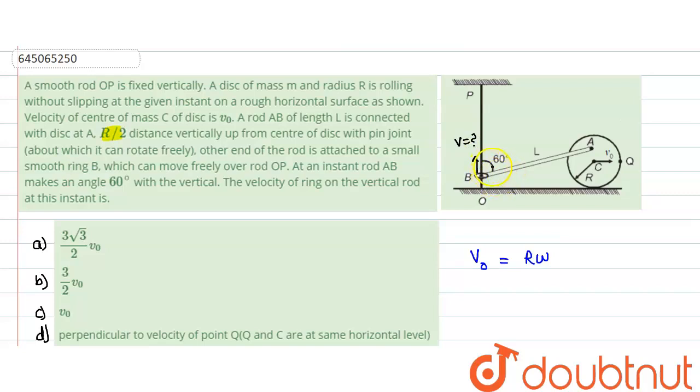Now what we know is that velocity along the rod is basically same for each and every point on the rod due to the constraint motion. So along the rod the velocity should be same. That means if v is the velocity at this end, the velocity along this rod would be v cos 60°.